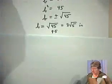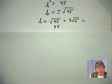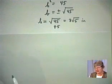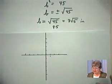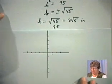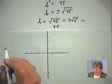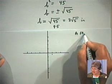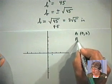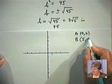The nice thing about the Pythagorean Theorem is that it's used in many different places. One of the places we're going to use it is to find the distance between two points. Suppose we have point A with coordinates negative 3, 2, and suppose we have point B with coordinates 5, negative 4.